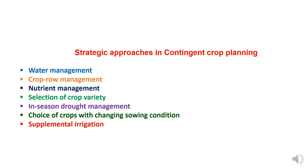The seventh strategic approach is supplemental irrigation. Giving an irrigation to stabilize and improve the yield of a crop which is otherwise dependent on rainwater is termed supplemental irrigation. Giving supplemental irrigation during prolonged drought periods by using underground water, even of poor quality, or rainwater harvested in tanks can make all the difference between a total crop failure and good yields. If crops face drought at sensitive growth stages, supplemental irrigation during this period is the best use of limited water supplies.